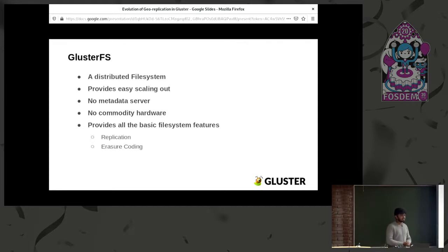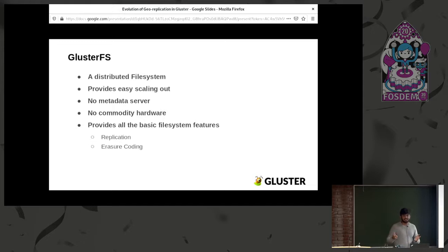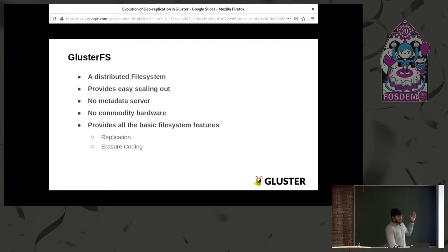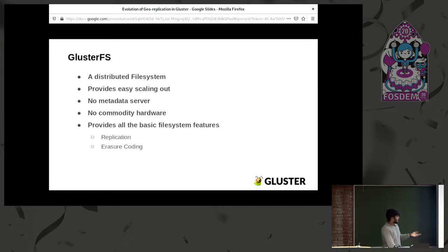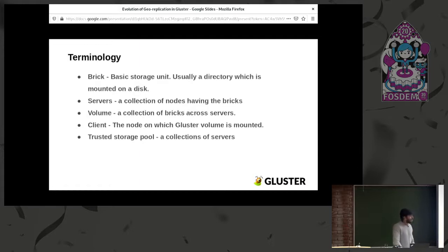Gluster is a distributed file system with no single point of failure. We don't have a metadata server, and that's how we achieve this no single point of failure. It provides easy scaling out, and it can run on any commodity hardware — you don't have to buy special boxes. It also provides basic file system features like replication, erasure coding, and more.